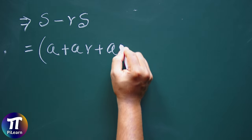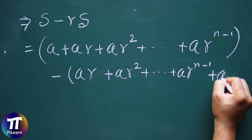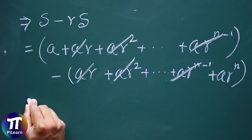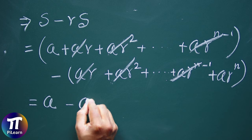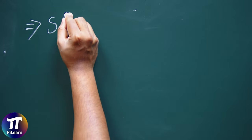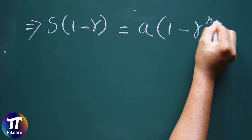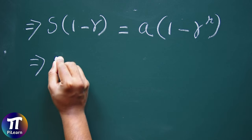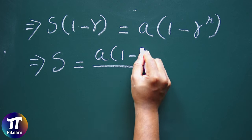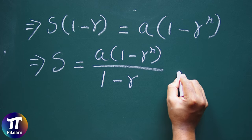So if we write S minus rS, all the terms ar, ar squared, up to ar^(n−1) get cancelled, and only a minus ar^n remains. So we can write S(1 − r) = a(1 − r^n). Therefore S = a(1 − r^n) / (1 − r), where r is not equal to 1, otherwise we would have a 1/0 form.